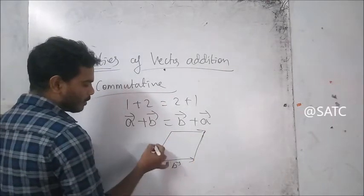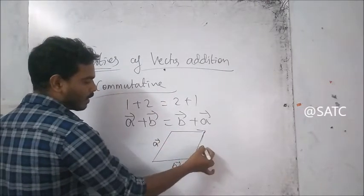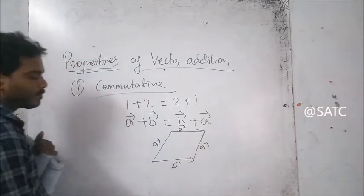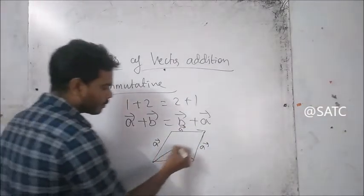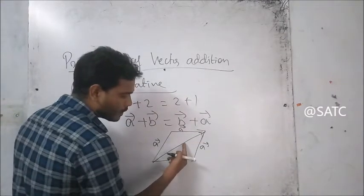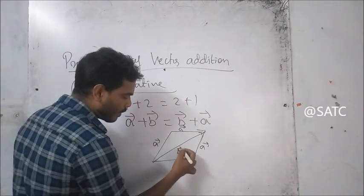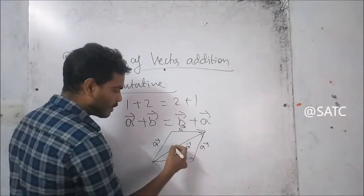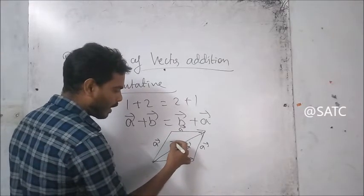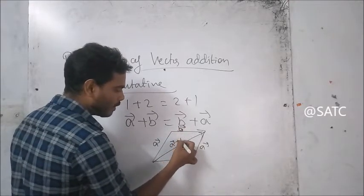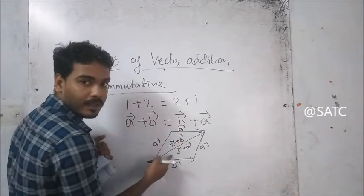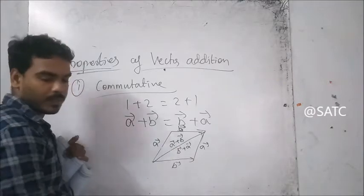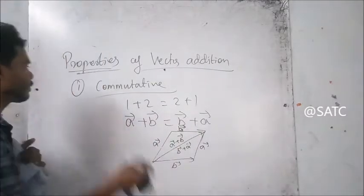So Vector B, this is Vector A, this is again Vector A. Vector A — sum of this is Vector B plus A. Sum of this is Vector A plus B. So Vector B plus A is equal to Vector A plus B — Commutative.